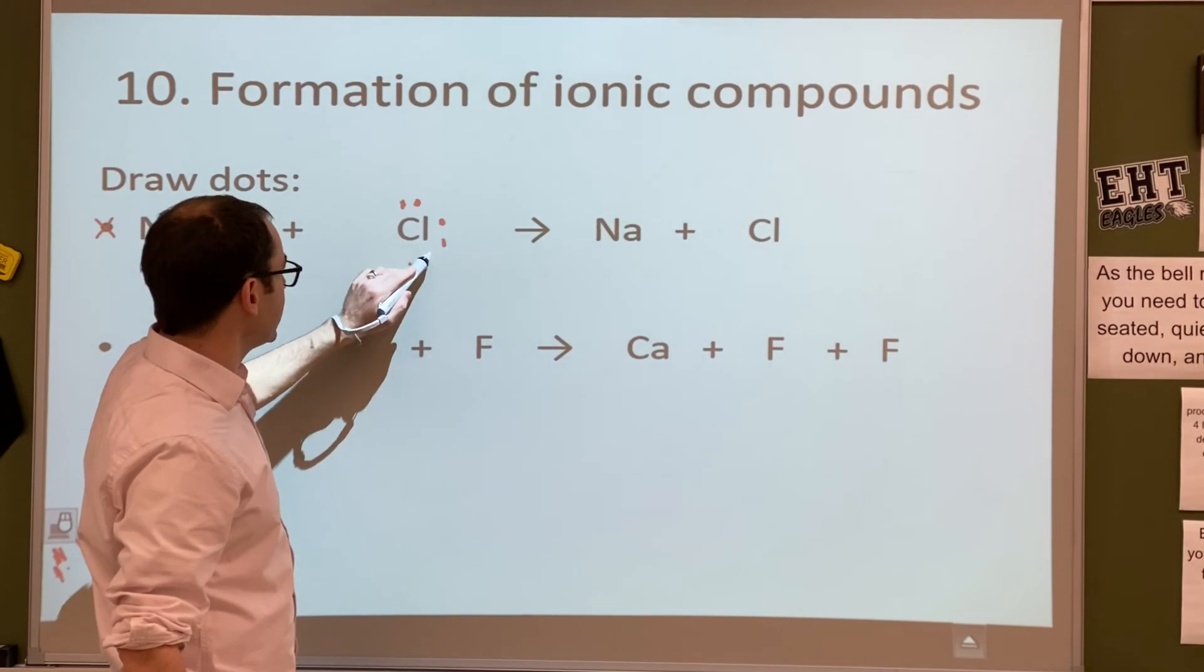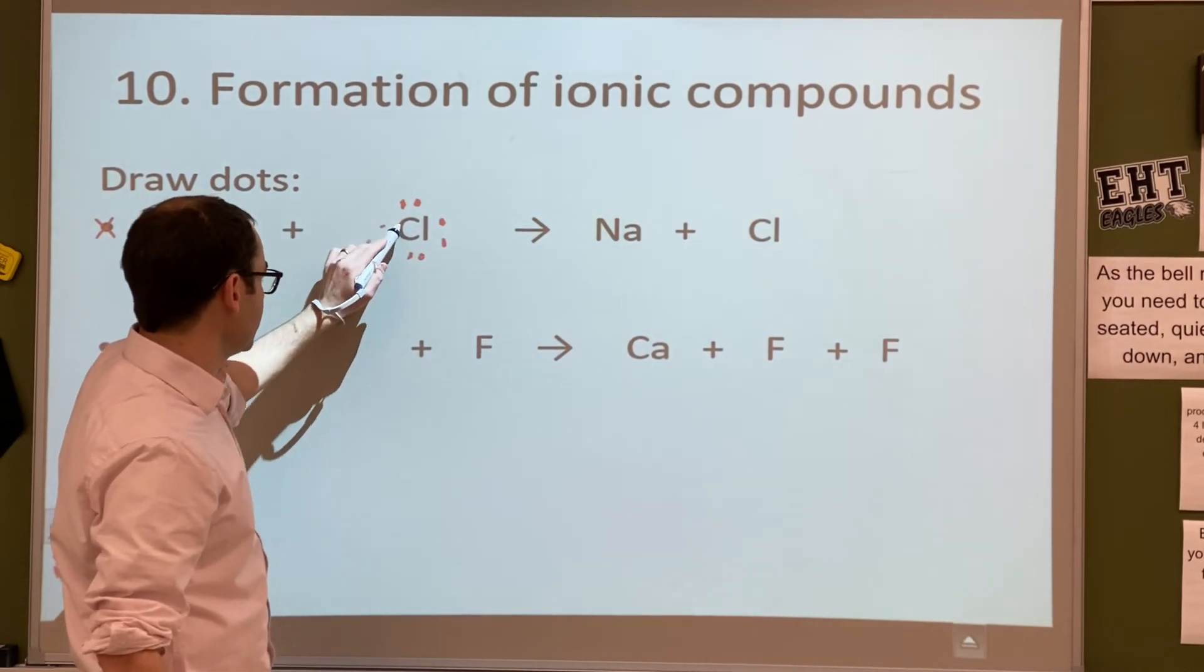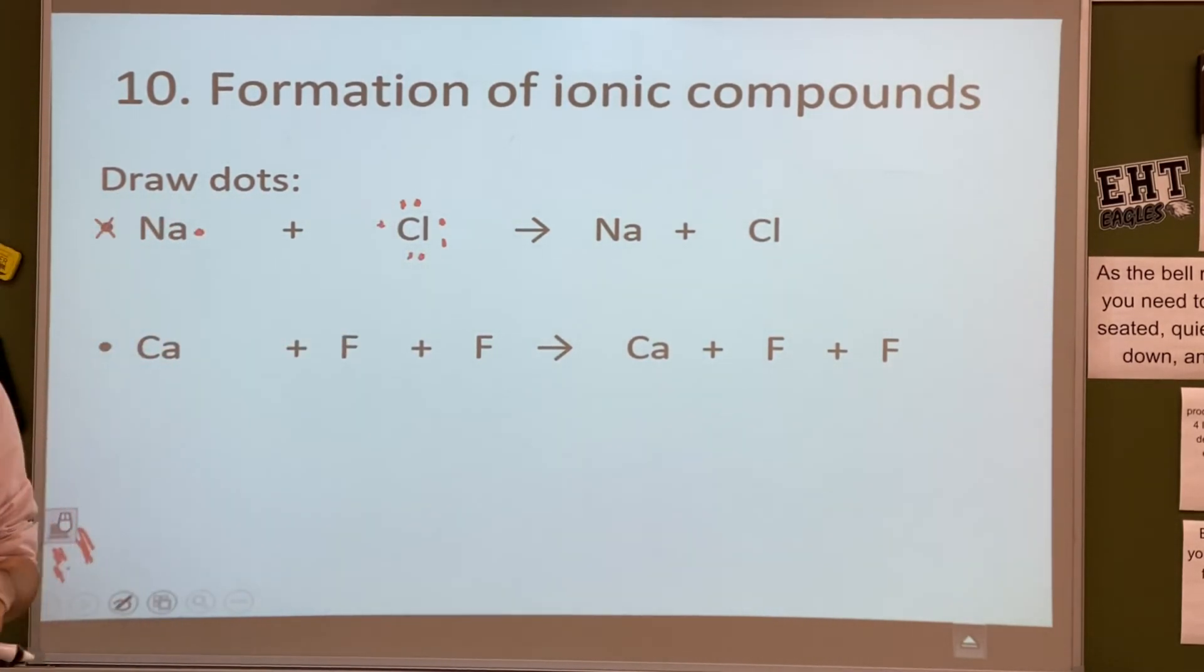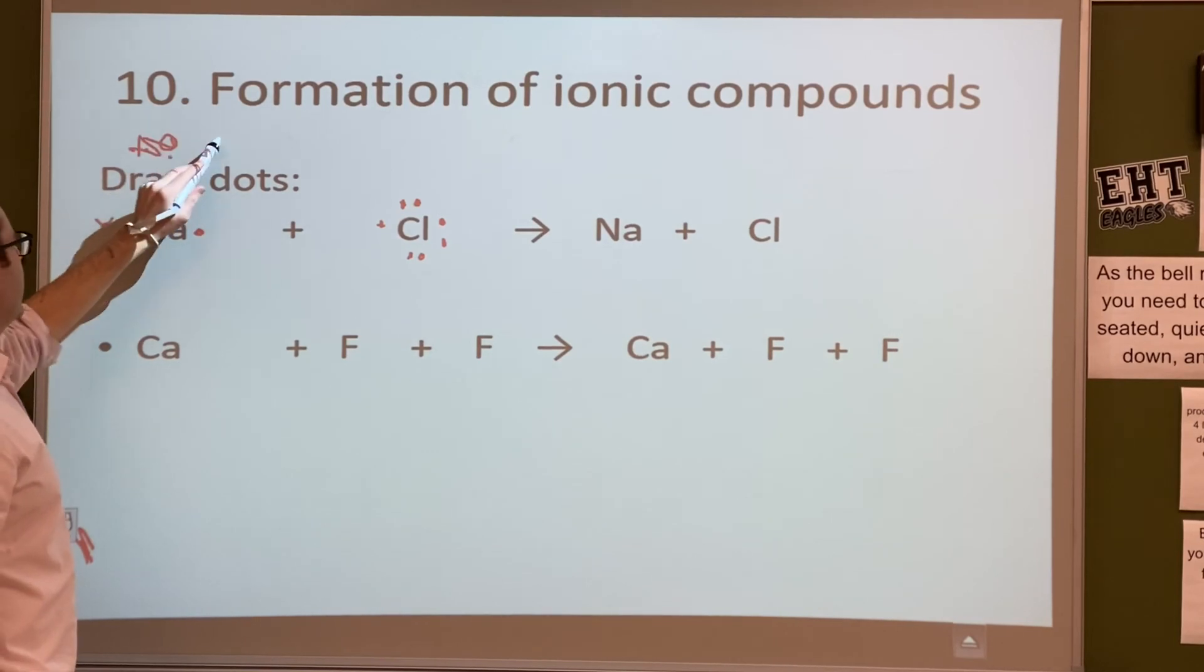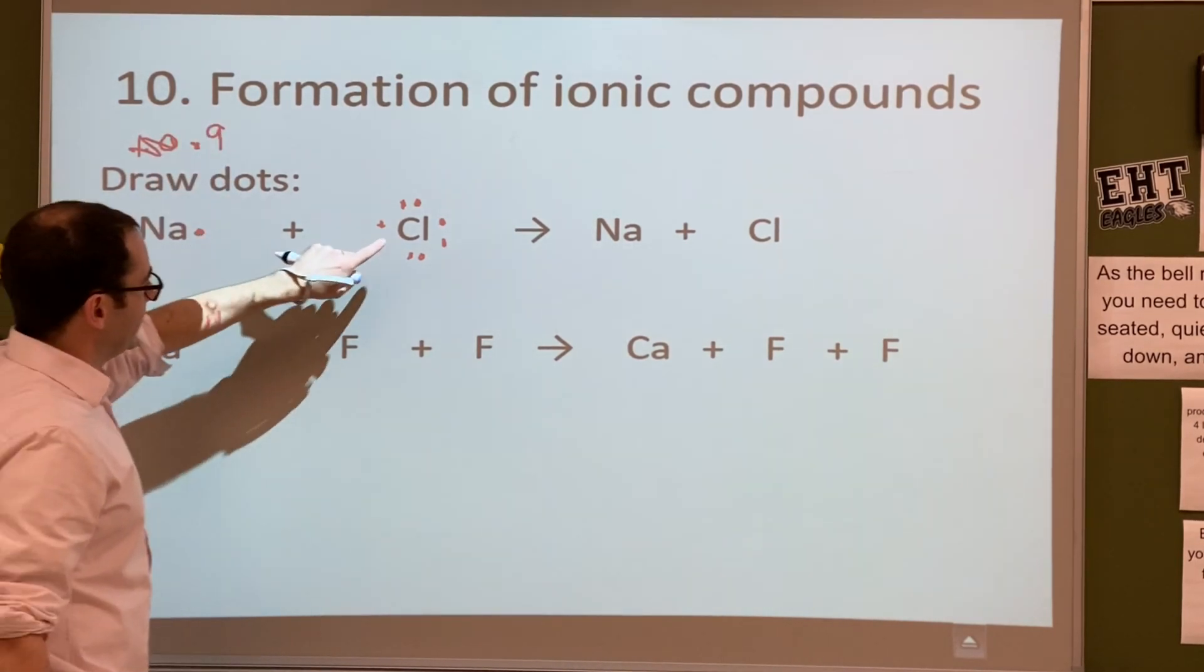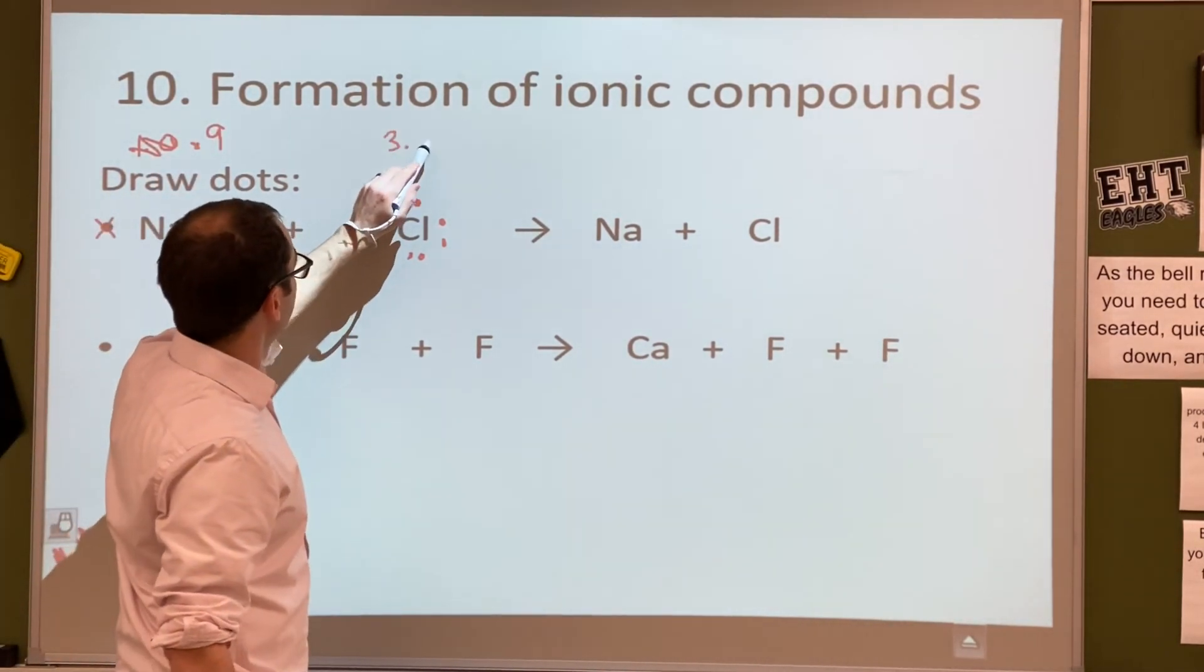Alright, what's the electronegativity of these? So we have to look at the electronegativity chart, I think it's on page four. Sodium is, I think, 1? 0.9. Oh, 0.9. Okay, cool. 0.9, and then chlorine is? 3.0.